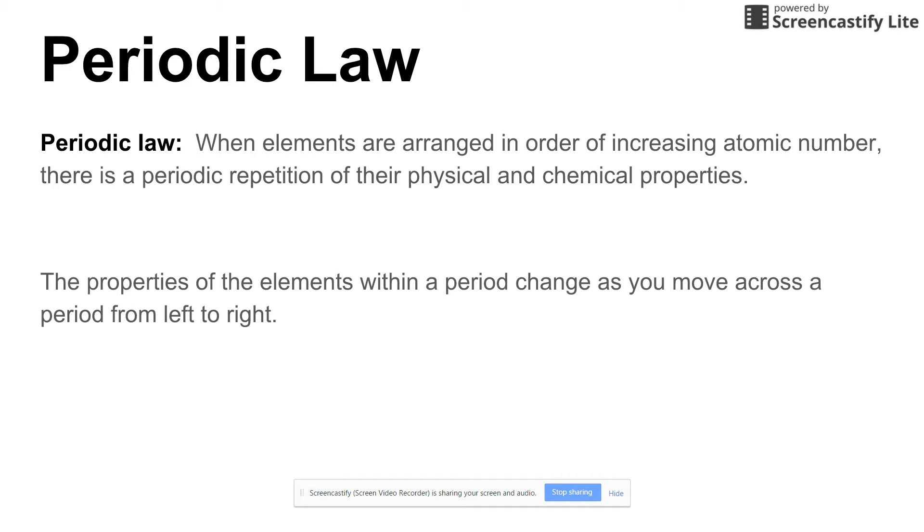If you were staying within a period, moving across a period, you would find that each successive box that you would go on the periodic table, you would find that the chemical and physical properties would change if you were moving left to right. But if you stay within a group on the periodic table, that's up and down, you would find that the chemical and physical properties within a group repeat.